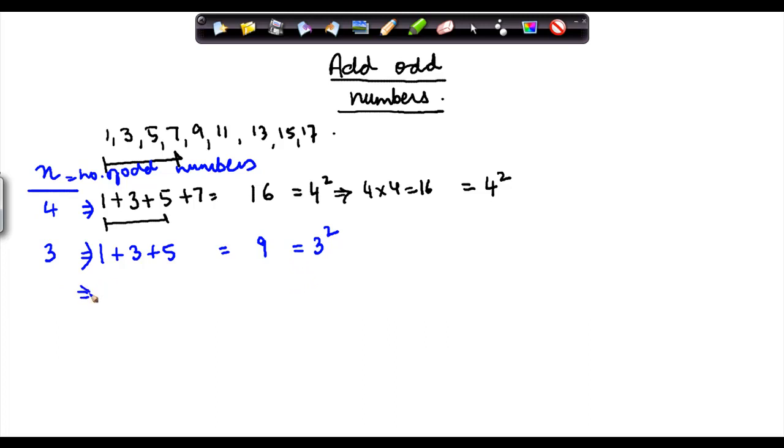How about 1 plus 3? The number of odd numbers I have taken is 2. 1 plus 3 equals 4, and 4 can also be written as 2 squared.